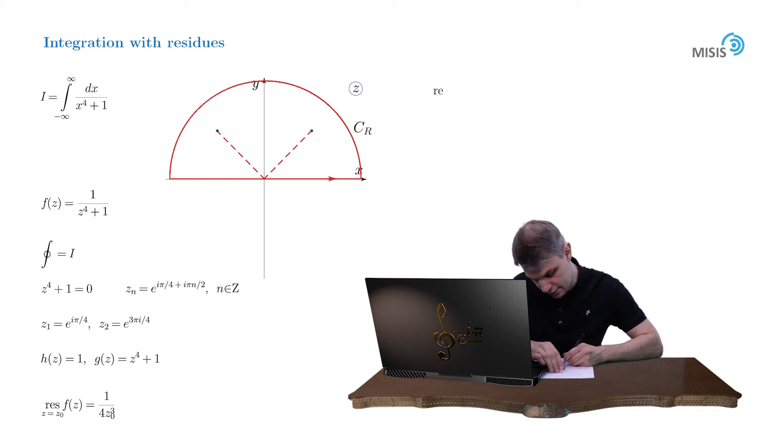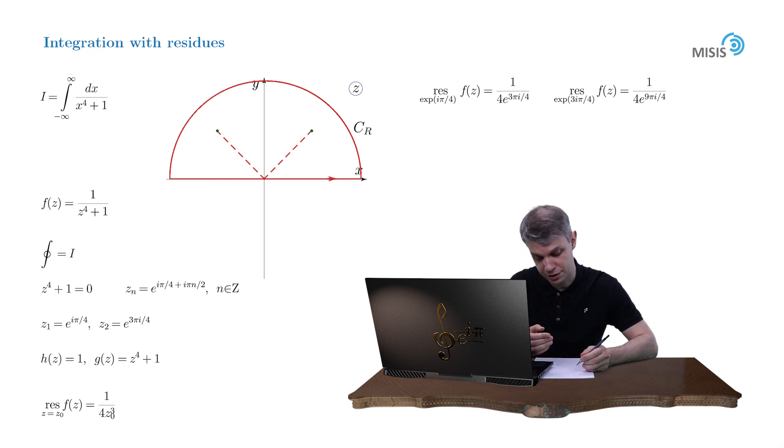This way we obtain for the residues 1 over 4 times e to 3πi by 4 for the residue at point z0 equals e to iπ by 4, and 1 over 4 times e to 9πi by 4 for the residue at point e to 3πi by 4. Let us simplify the expression for these residues. The first residue can be transformed into minus 1 quarter times e to iπ by 4, while the second residue can be transformed into 1 quarter times e to minus iπ by 4.